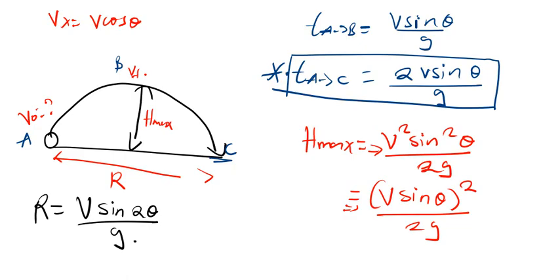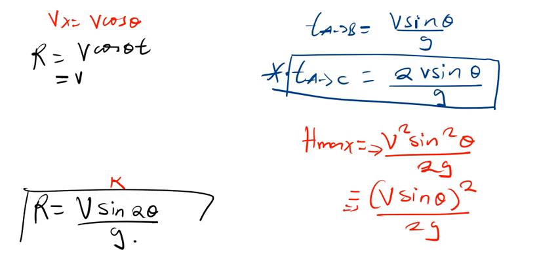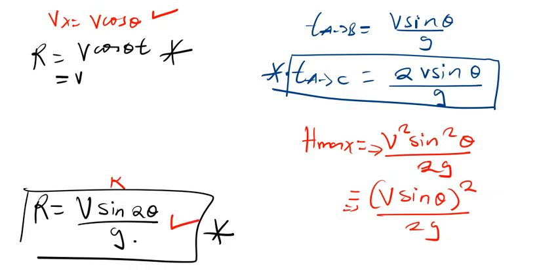To confirm the range formula: range equals V cos θ times T, and substituting T gives V² sin 2θ divided by G. For case two, you need to know how to find Vx, and for range you can use either formula — whichever you prefer. For total time in air, use 2V sin θ / G. For maximum height, use V² sin² θ / 2G. These are the only formulas you need.